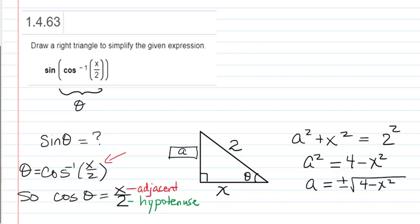Now, if we're assuming that theta is in a right triangle, that would mean theta is between 0 and 90 degrees. It's an acute angle and its cosine and sine would be positive. So I'm going to make the assumption that this is a positive square root.